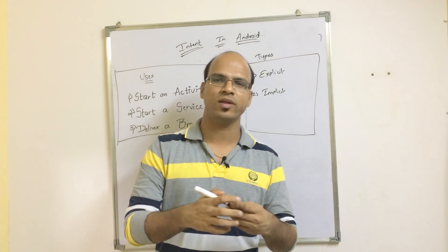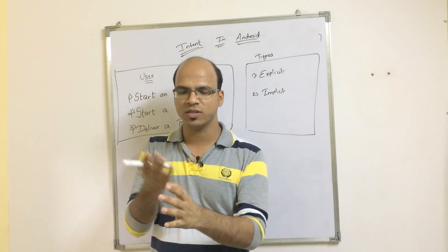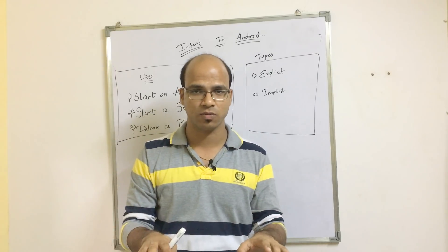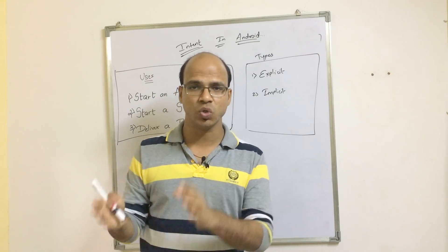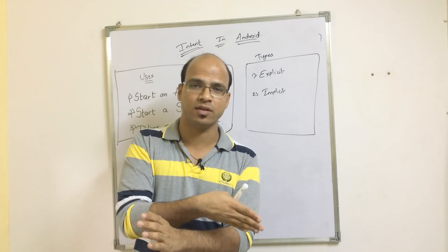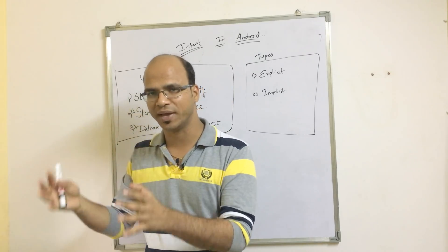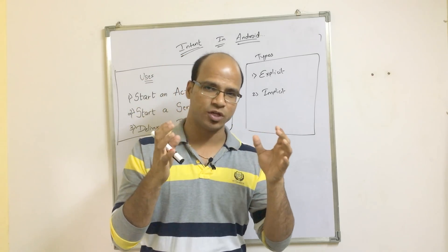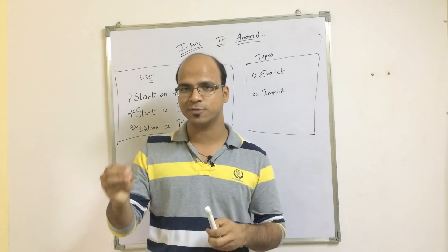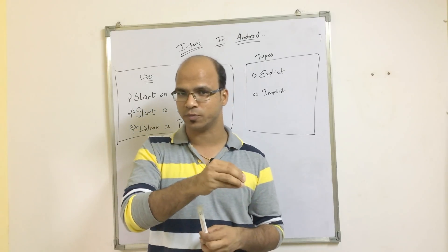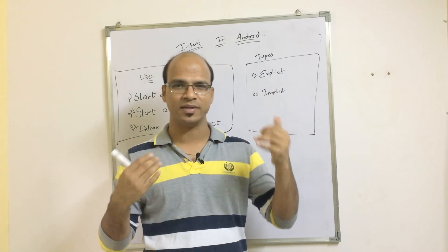What is explicit intent? Let's say you want to call an activity from your activity within the same application. In this scenario you have to use explicit intent because you know the name of the second activity. For example, if you have Activity 1 and Activity 2, you are able to call Activity 2 from Activity 1 because you know its name — that is explicit intent.